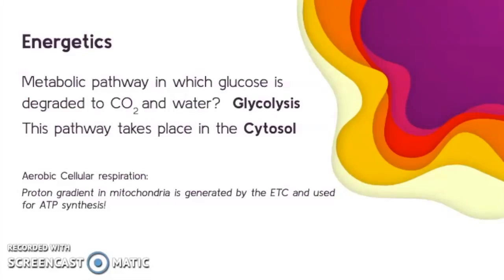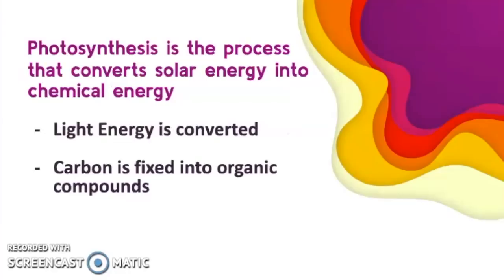In energetics, when we're talking about the metabolic pathway where glucose is degraded to carbon dioxide and water, that is glycolysis. This pathway takes place in the cytosol. You might want to go back and review your steps in cellular respiration, and the important part at the very end is our proton gradient in the mitochondria. It's generated by the electron transport chain and used for ATP synthesis. This is the energy that we're getting at the end of the process.